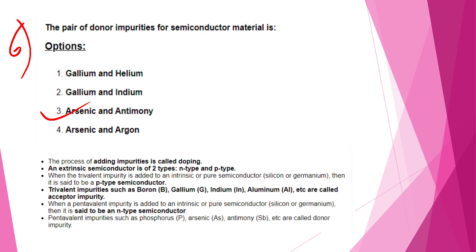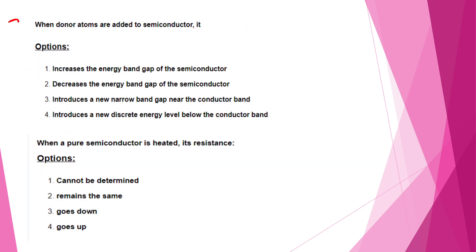We can add P-type Semiconductor. Trivalent impurities — such as Boron, Gallium, Indium, Aluminium — are called Acceptor Impurities. When trivalent impurities are added to an intrinsic semiconductor, it becomes a P-type Semiconductor. For N-type Semiconductor, we look at Pentavalent Impurities, such as Phosphorus, Arsenic, Antimony — these are called Donor Impurities. So: Trivalent Impurities are Acceptor Impurities; Pentavalent Impurities are Donor Impurities.